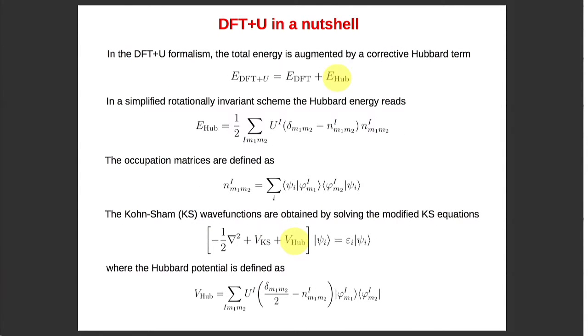Just to remind all of us what is DFT+U. In DFT+U, the total energy is given as the sum of the LDA or GGA total energy plus the correction, which is the Hubbard correction energy, given by this expression where we have summation over atoms and states M1 and M2. U labels the Hubbard parameter, and N are the occupation matrices defined as the scalar product between Kohn-Sham wave functions and localized orbitals. In practice, we have to solve the modified Kohn-Sham equation where we have the extra Hubbard potential defined like this.